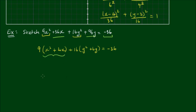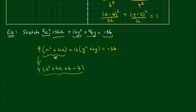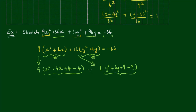Completing the square on the first parenthesis: with x squared plus 4x, I add 4 to complete the square, and subtract 4 to effectively add zero. To maintain equivalency, the coefficient 9 comes down as well. For the second parenthesis, I add 9 to the terms y squared plus 6y, and subtract 9 to maintain equivalency. The coefficient 16 is copied down as well.